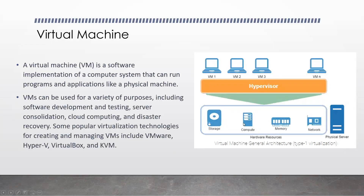In this diagram you can see the VM and the hypervisor, which we just discussed. You can create any number of virtual machines, and they share the storage, compute, memory, and network — all on a single physical server. This is an example of Type 1 virtualization.